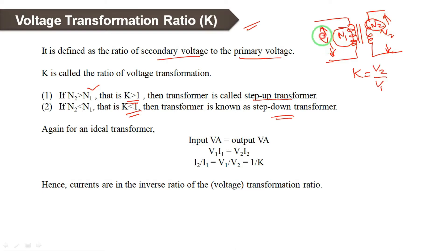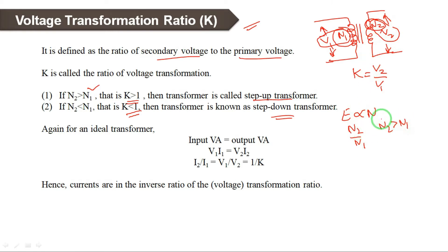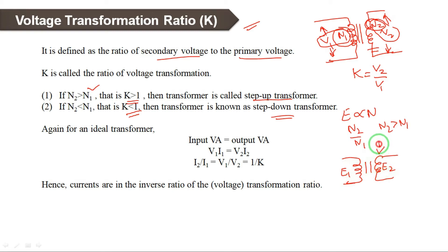EMF or voltage is directly proportional to the number of turns. So the ratio N2 by N1 — if N2 is more compared to N1, secondary turns are more, which means the induced secondary voltage is also more compared to primary. So the induced EMF E2 is high compared to E1 because N2 is greater than N1. When the induced EMF is more compared to primary, it is called a step-up transformer.